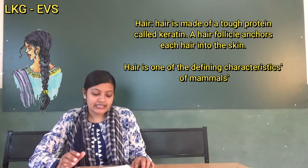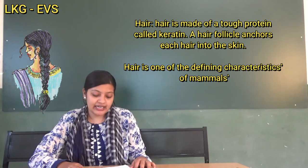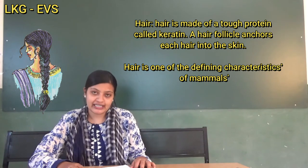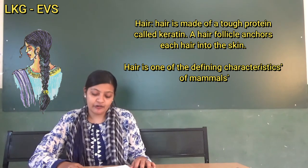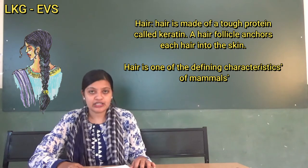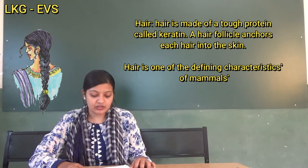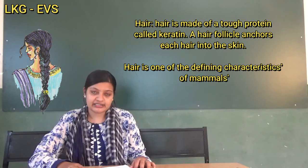Next, H-A-I-R. Hair. Hair is made of a tough protein called keratin. A hair follicle anchors each hair into the skin. Hair is one of the defining characteristics of mammals.